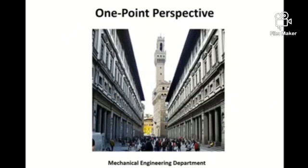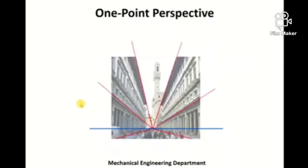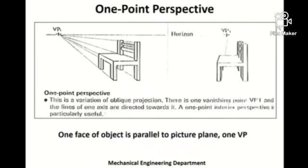This is an example of a one-point perspective view. The vertical edges are parallel to each other and the horizontal edges are also parallel, but the edges along the depth direction of the street are non-parallel and appear to meet at one particular point — the single vanishing point. Another example is a chair where all vertical and horizontal edges are parallel, whereas edges along the depth direction are non-parallel and tend to meet at one vanishing point.